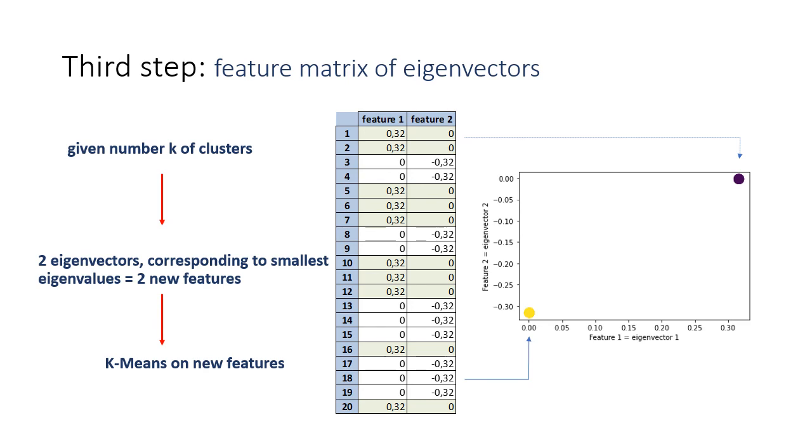With that new representation, data points can be easily divided into two groups for future k-means. This can be easily seen on the picture. Here is the first two groups, and here is the second group.